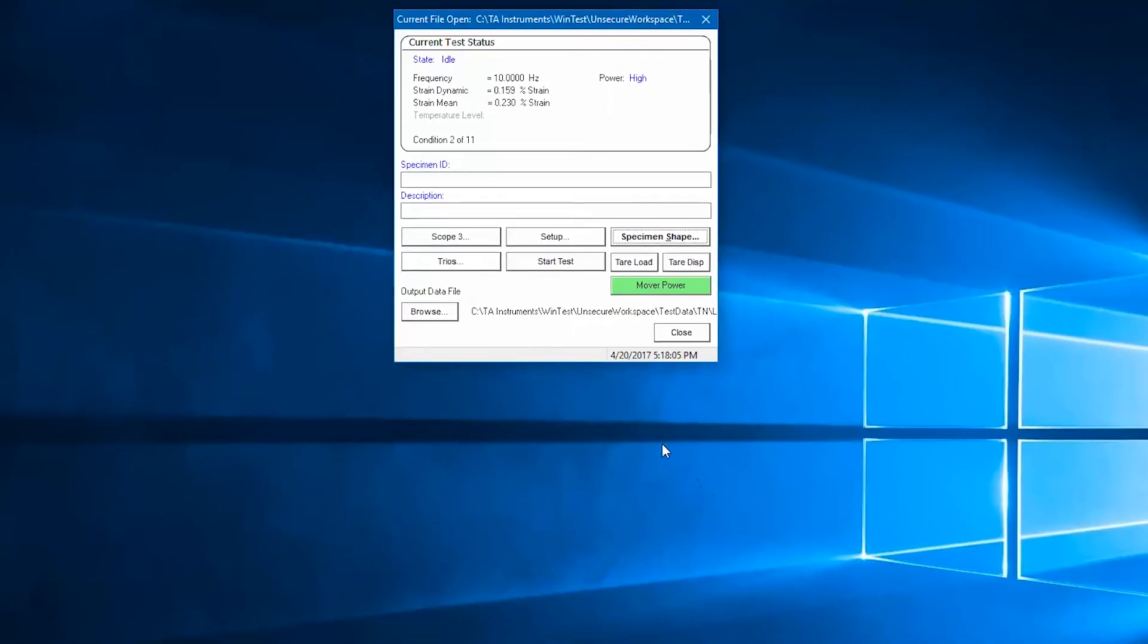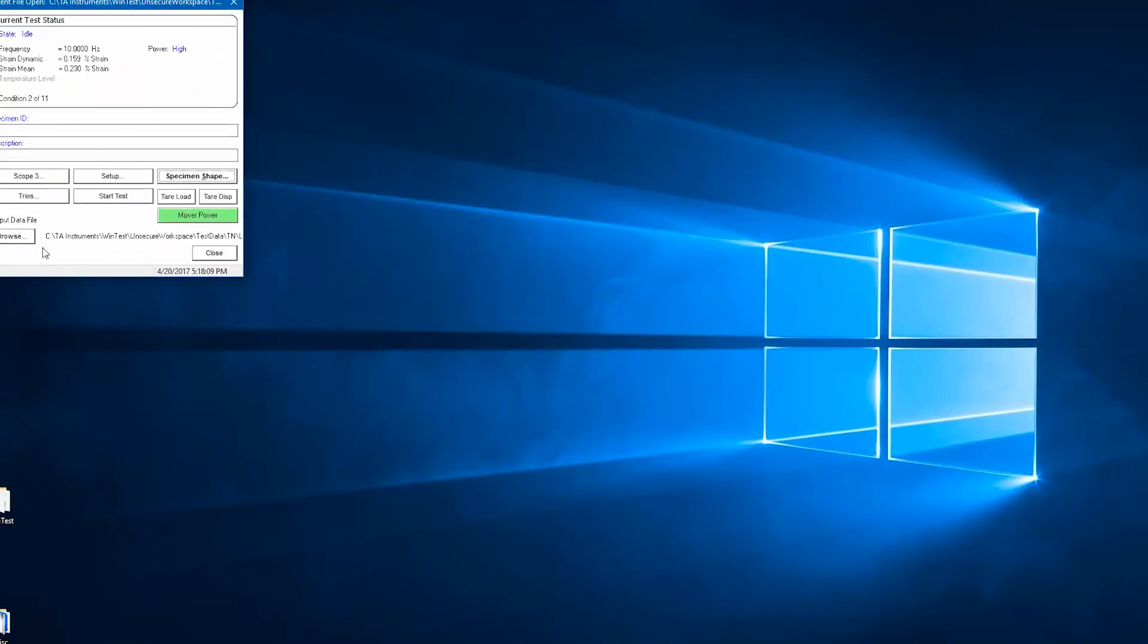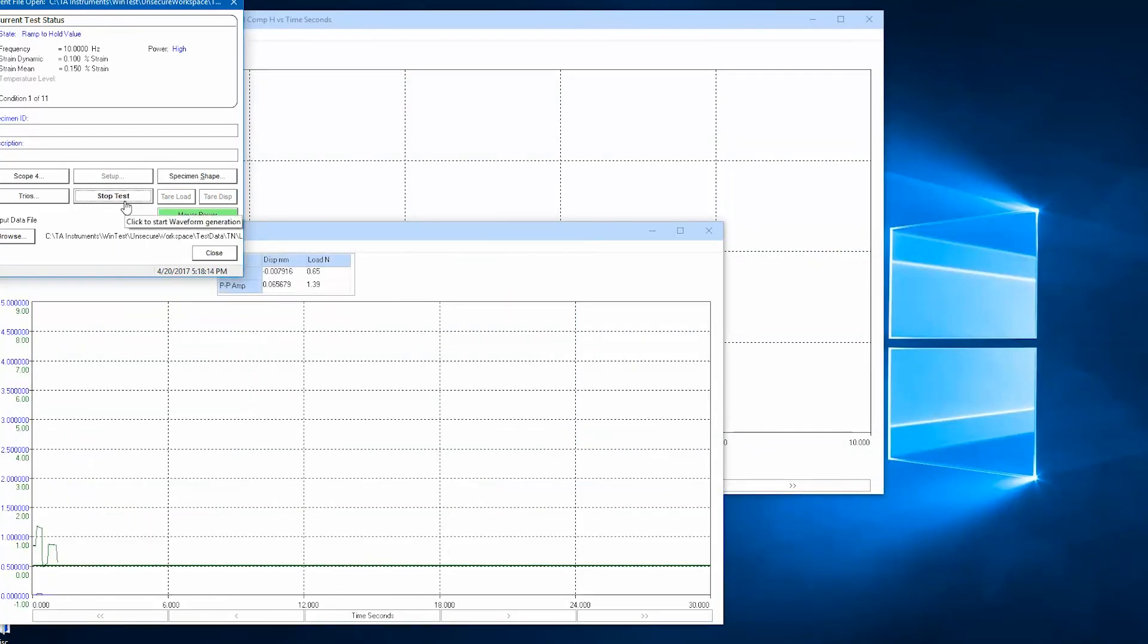WinTest can now use that displacement channel to effectively measure the gauge length of my sample. Now, I've fully entered my specimen shape information and am ready to run my test.